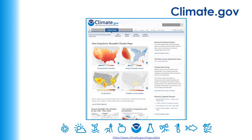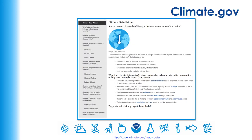Climate.gov has tons of maps and data available. They are very visual and very easy to look at, and there is also lots of modeled data available. Climate.gov also has a really great climate data primer — if you're just getting started using climate data, this website will break it down for you and help prepare you to work with it.